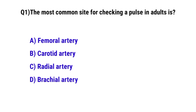Question number 1. The most common site for checking a pulse in adults. The correct option is C: Radial artery.